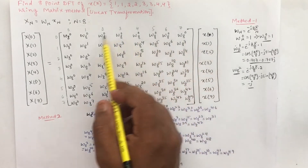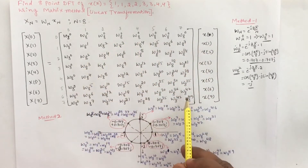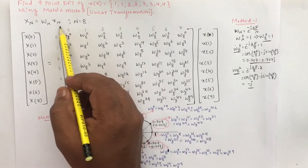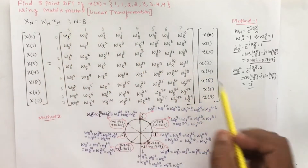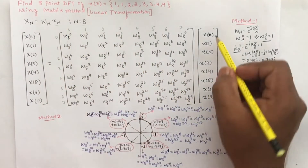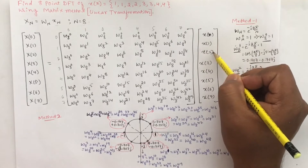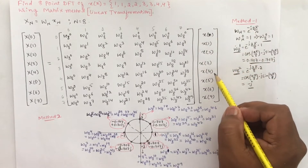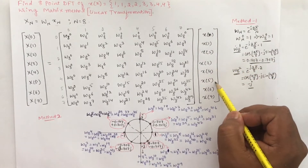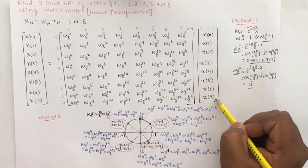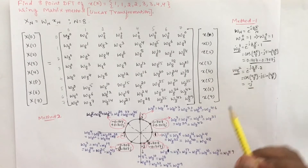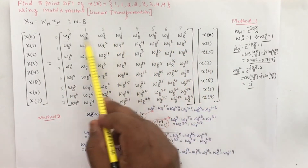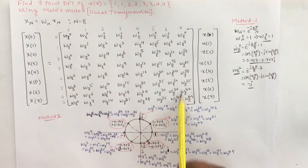After writing the 8×8 matrix, we can write the matrix for x[n], which is an 8×1 matrix. So we have written x[0], x[1], x[2], x[3], x[4], x[5], x[6], and x[7]. After writing this matrix, we need to fill in the twiddle factor values.